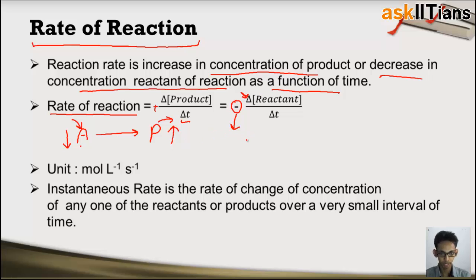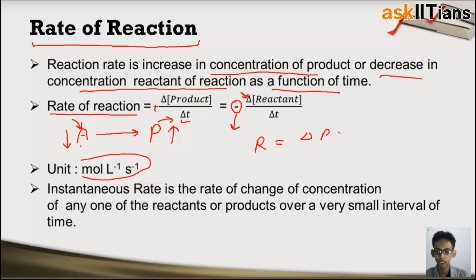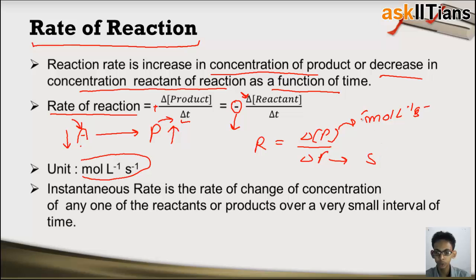What will be the unit of rate of reaction? It is mole per liter per second. Because rate is just the change in concentration of either product or reactant with time. The unit for concentration is mole per liter, and that of time is second. So the unit of rate of reaction becomes mole per liter per second.